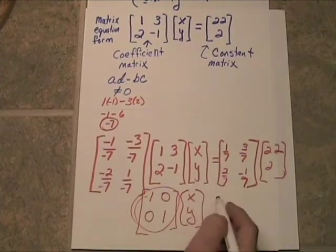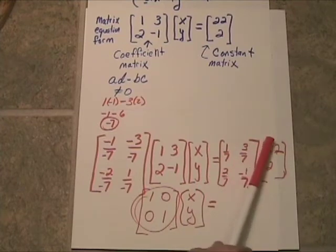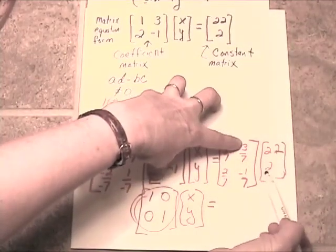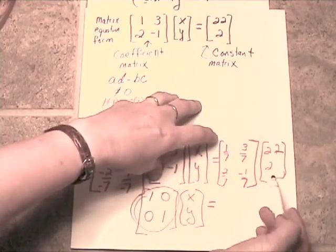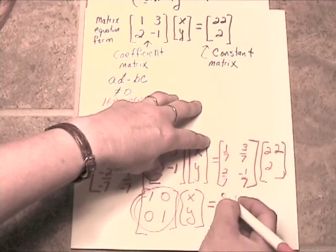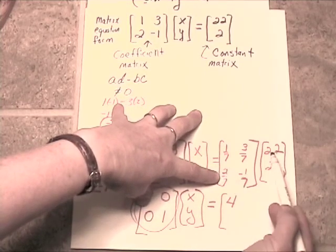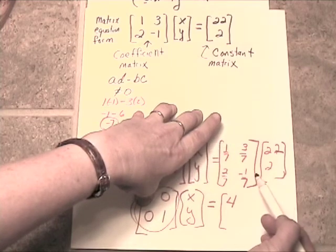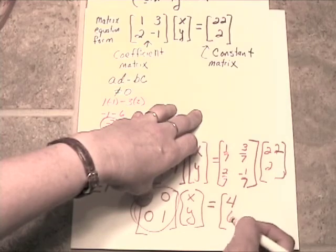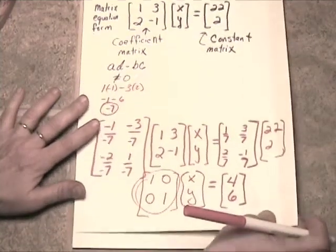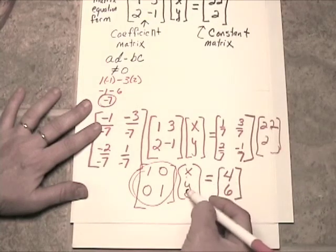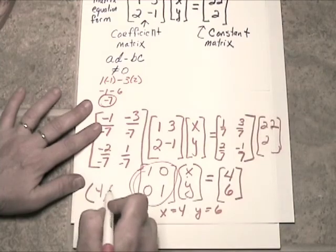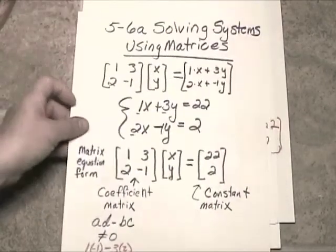So now to get our final answer for x and y, all we have to do is multiply across here and down here. Let's do this multiplication. 1/7 times 22 is 22/7. 3/7 times 2 is 6/7. So 22/7 plus 6/7 is 28/7, which is just plain old 4. And then here. 2/7 times 22 is 44/7. And then negative 1/7 times 2 is negative 2/7. 44/7 plus negative 2/7 is 42/7, which is 6. So there we have our answer. The x is equal to 4 and the y is equal to 6. So the ordered pair (4, 6) is the answer to this system.